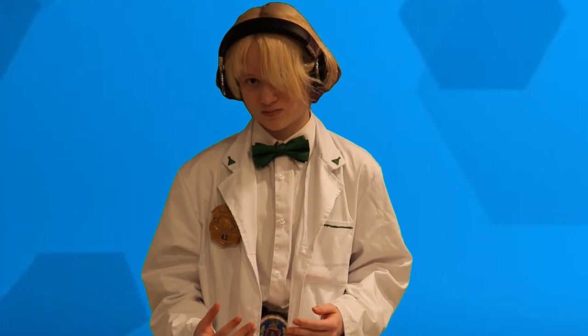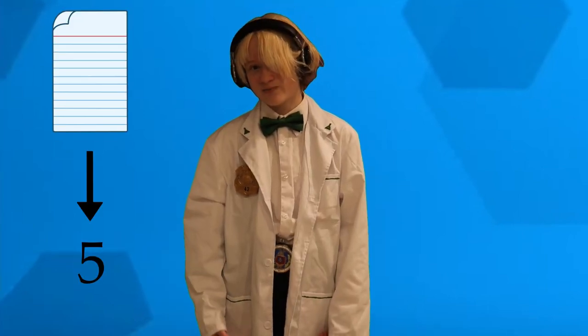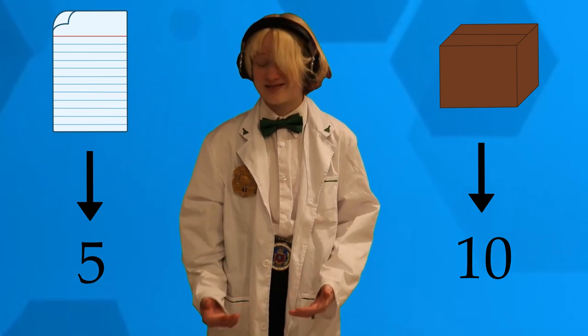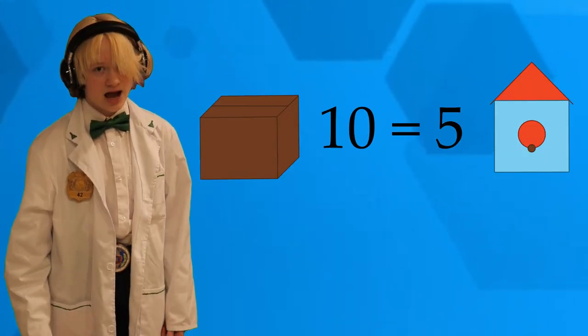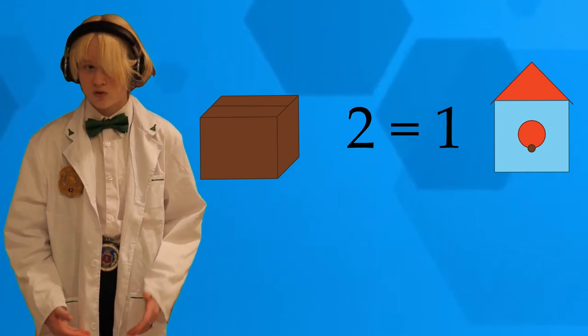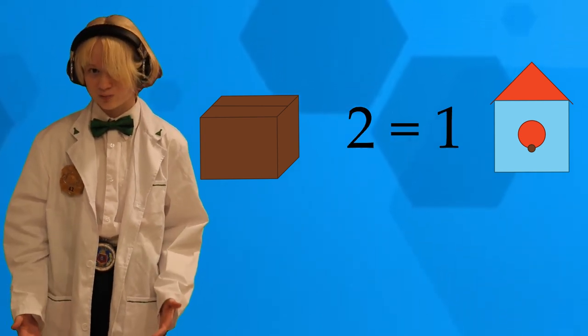The best way for me to do this is to have them trade the amount that they make in the same amount of time with the same amount of resources. The Paper Kingdom makes five birdhouses with 10 trees in 10 minutes. The Cardboard Kingdom makes 10 sheets of cardboard with 10 trees in 10 minutes. So to make everyone happy, the cost of five birdhouses should be 10 sheets of cardboard, or one birdhouse should be two sheets of cardboard.